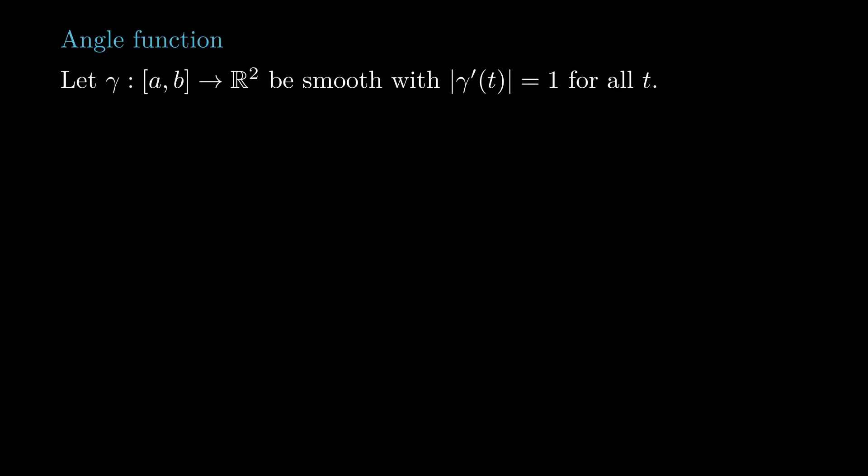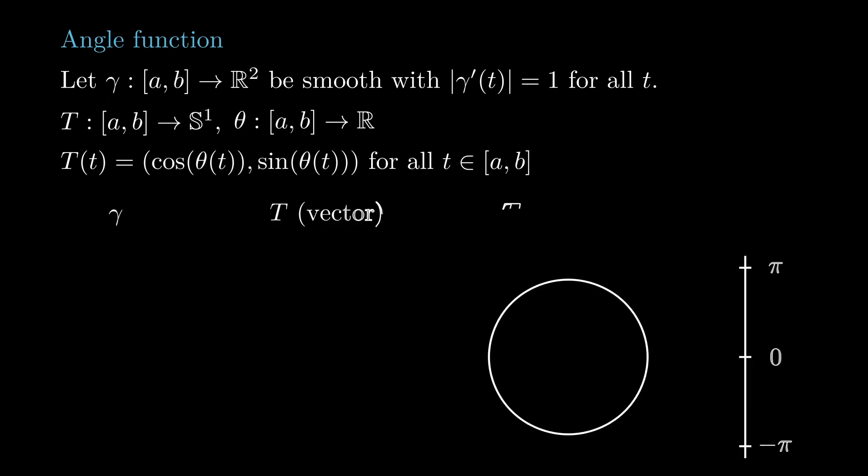We begin this lesson by defining the angle function. For a plane smooth curve gamma parametrized by arc length, its tangent indicatrix is a function from AB to the unit circle, so we can find the continuous function theta from AB to the real numbers that corresponds to the argument of the tangent indicatrix.